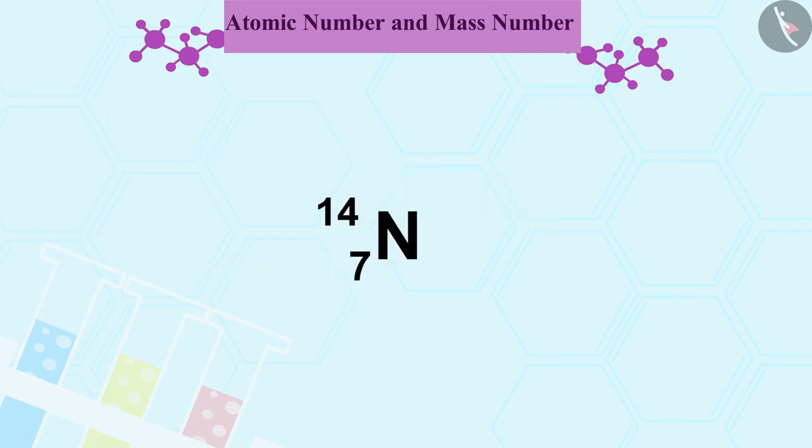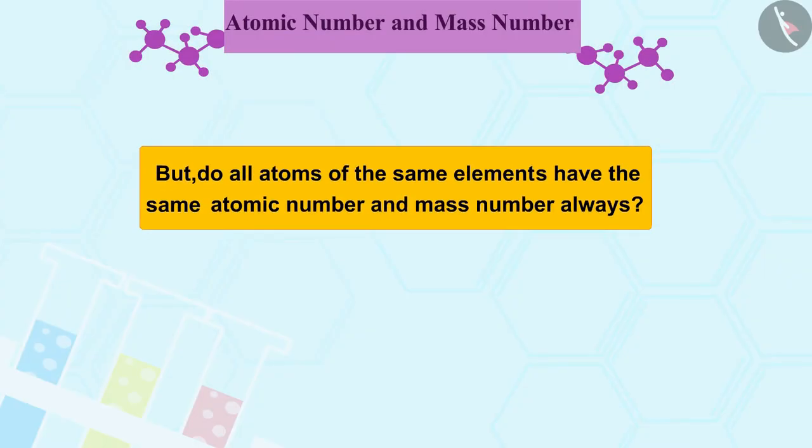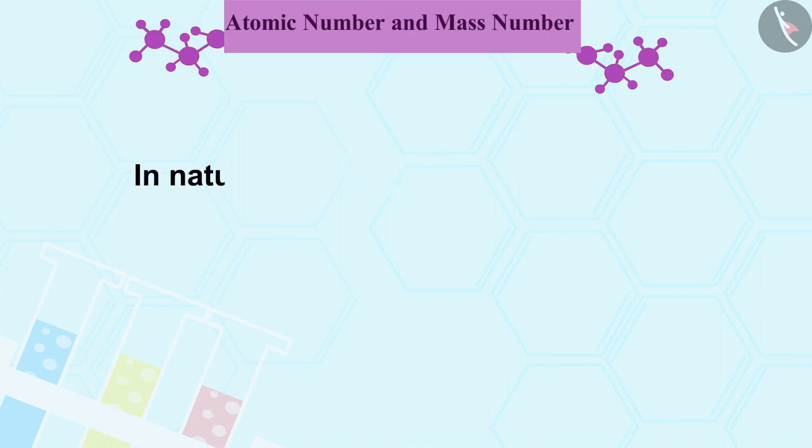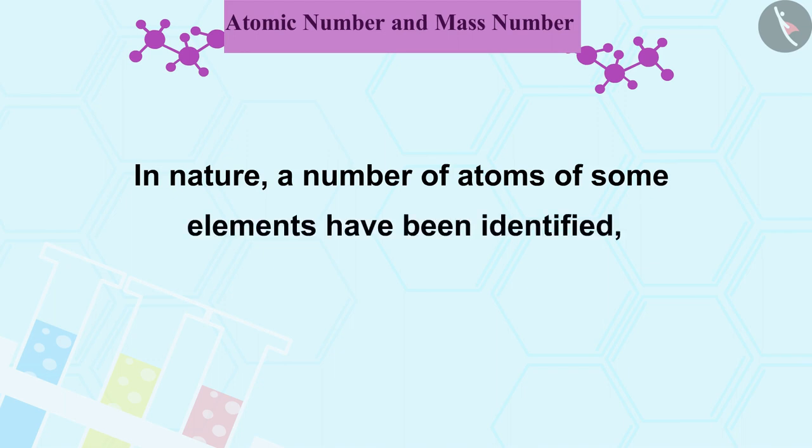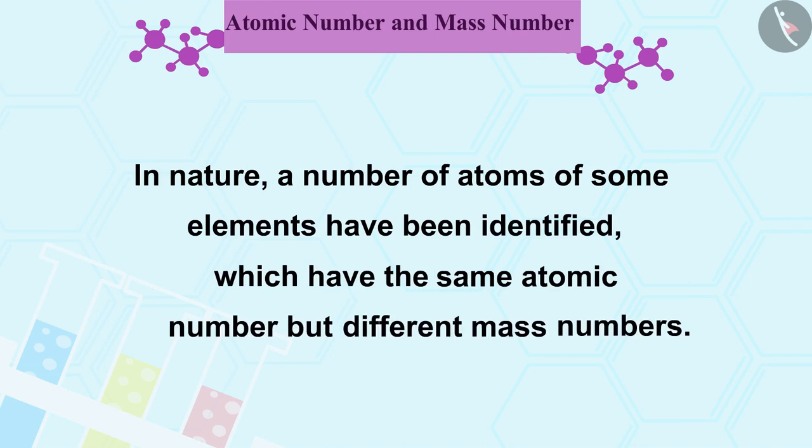But do all atoms of the same elements have the same atomic number and mass number? No. In nature, a number of atoms of some elements have been identified which have the same atomic number but different mass numbers.